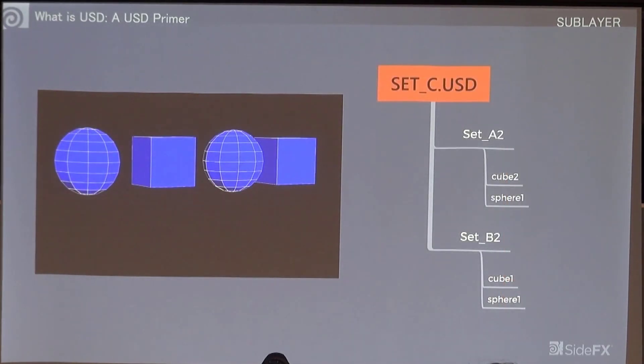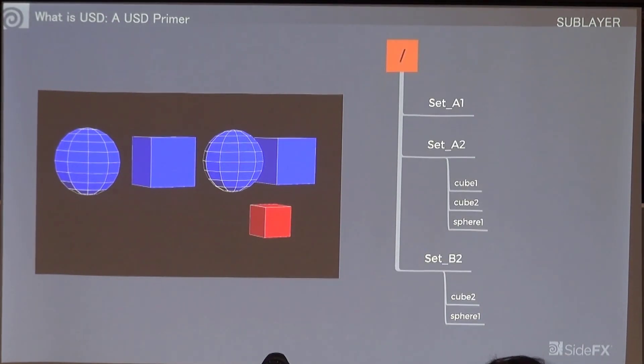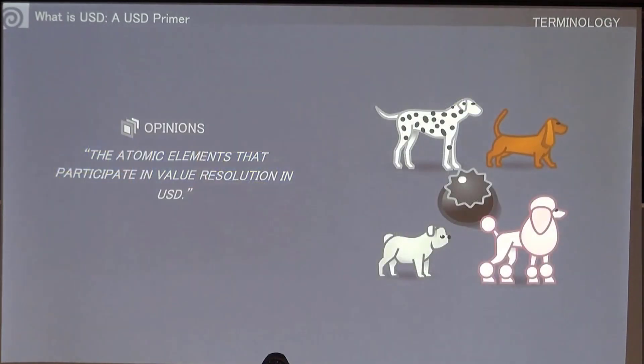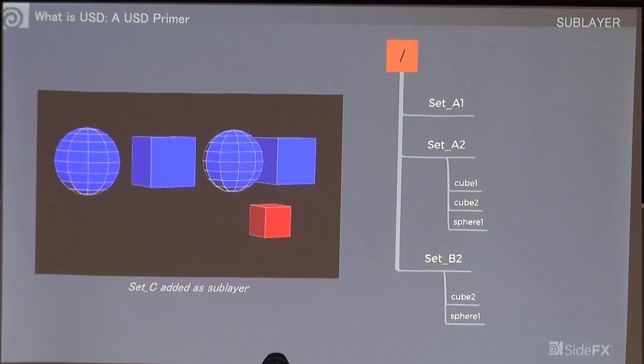Imagine now we have a third USD layer that we want to sublayer into our stage. Here we have set C, which has a2 and now b2 in it with cube2, sphere1, and cube2. Now when we sublayer that into our existing stage, this is the result we get. Set C has a stronger opinion because as you sublayer things in, just like Photoshop, you're putting that layer on top.